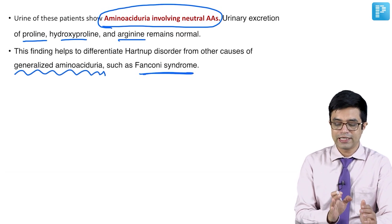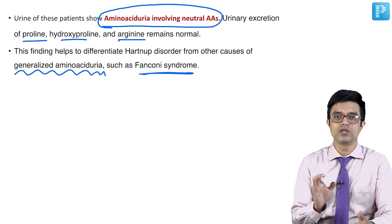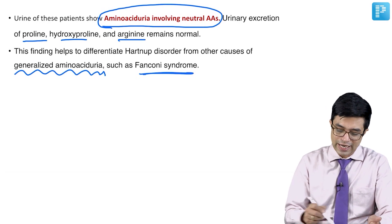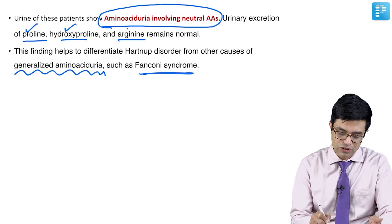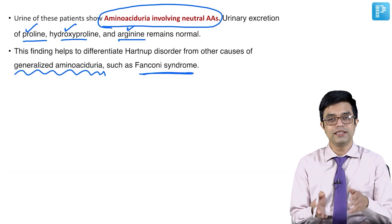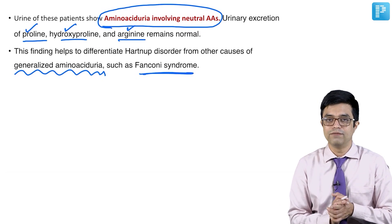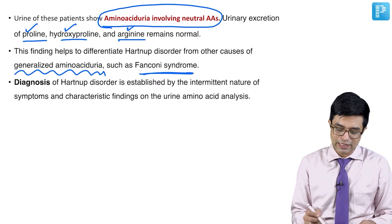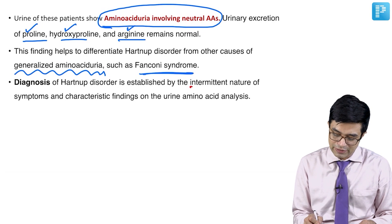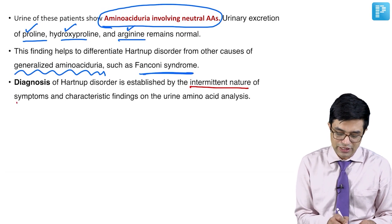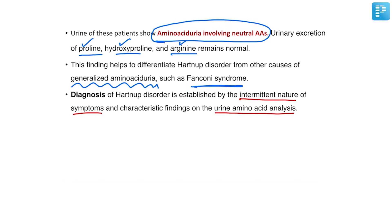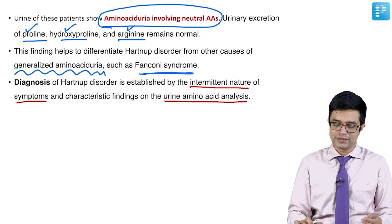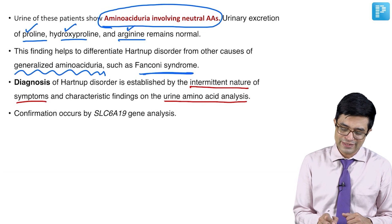In Hartnup disorder, there is selective aminoaciduria involving the neutral amino acids, while proline, hydroxyproline, and arginine are spared. In Fanconi syndrome, they will also be involved. Diagnosis can be established by the intermittent episodic nature of the CNS symptoms and characteristic findings on urine amino acid analysis, or by molecular analysis using SLC6A19 gene analysis.